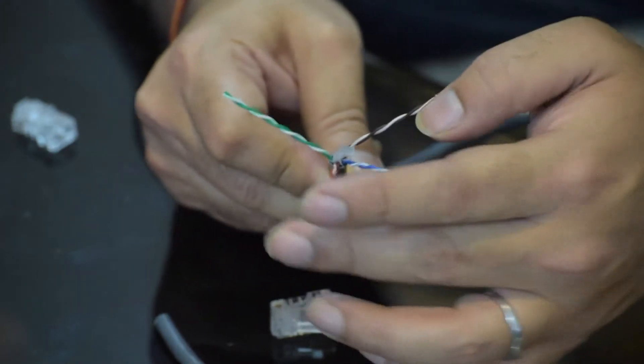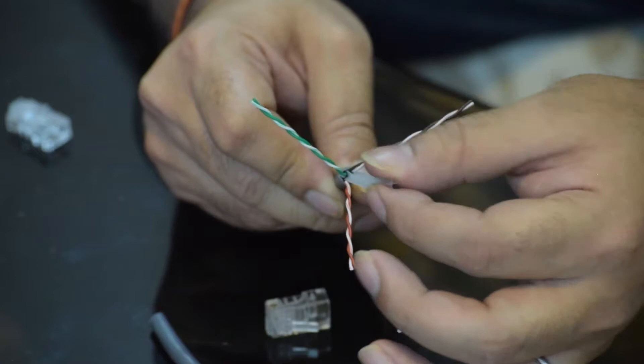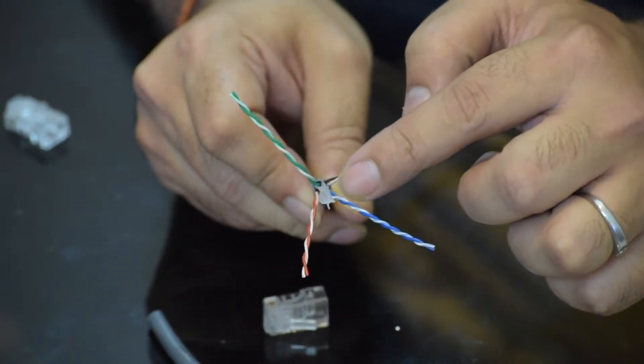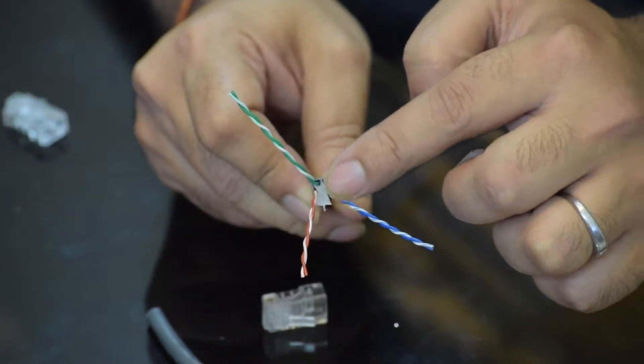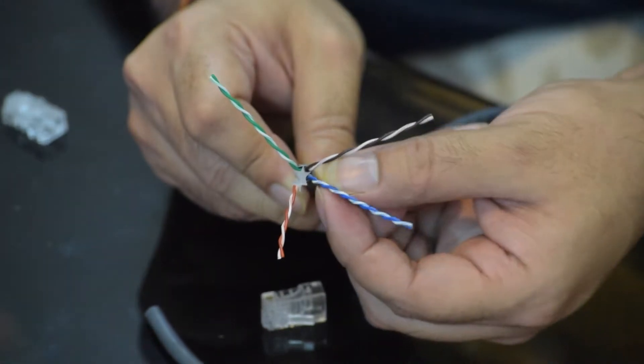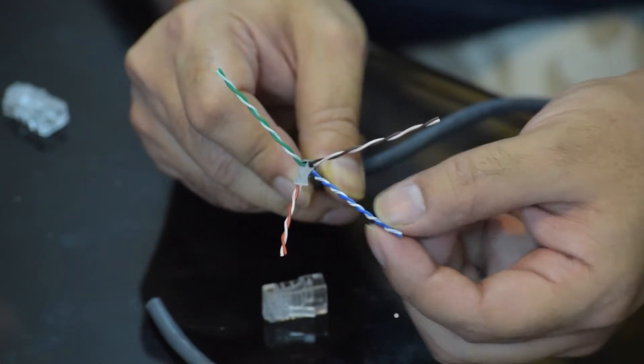So this is a category six cable. It comes with a plastic separator inside it and this is one of the primary differentiators between a category five and a category six cable. The category six cable would also have a higher density of twists compared to a category five cable.